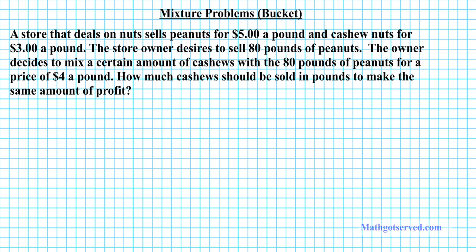Let's take a look at question number one. A store that deals in nuts sells peanuts for five dollars a pound and cashew nuts for three dollars a pound. The store owner desires to sell 80 pounds of peanuts. The owner decides to mix a certain amount of cashews with the 80 pounds of peanuts for a price of four dollars a pound. How much cashews should be sold in pounds to make the same amount of profit?